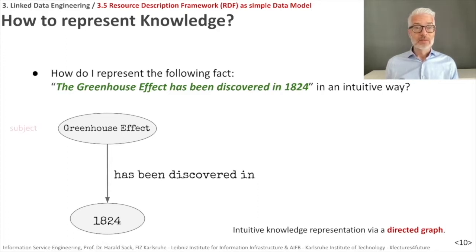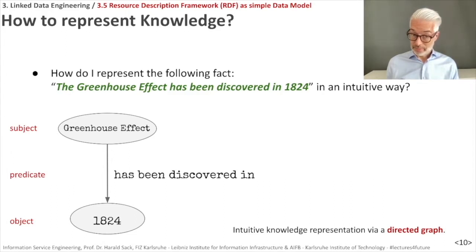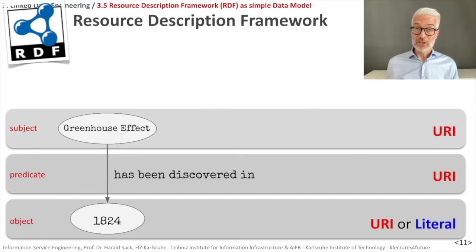That's rather easy. So we have here the subject, some kind of a predicate, and an object — 1824. Now the question is, if we want to transfer this simple structure into the web, how do we represent these words in the web? We could use URIs, of course. We identify and access something via URIs in the web. Identification and access in the web, no matter whether it's a document or not, can be done via URIs.